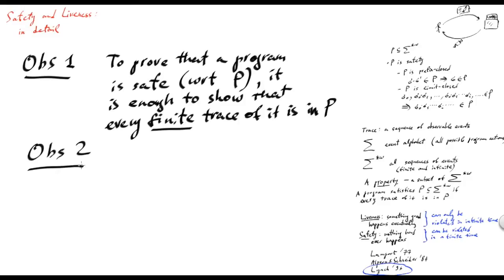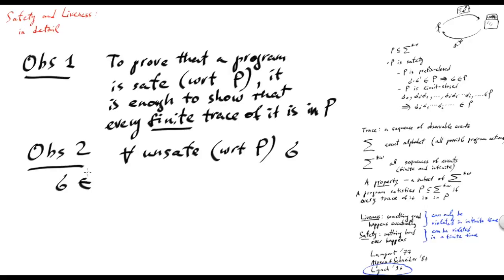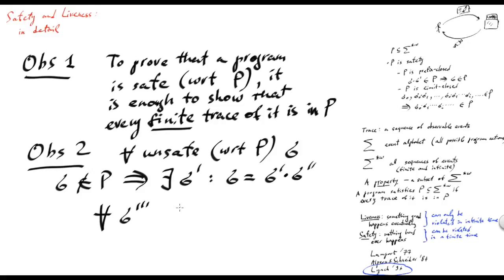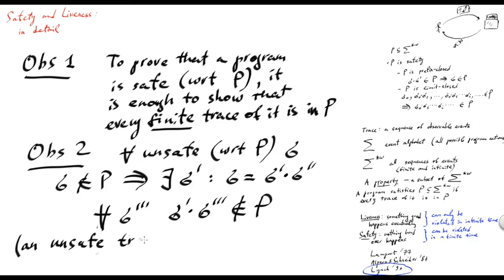The second observation is that if we have an unsafe trace sigma with respect to a given safety property — meaning that sigma does not belong to P — it follows that there exists a prefix of it such that for all extensions of it we get an unsafe trace. This intuitively implies that an unsafe trace cannot be corrected. There is always a finite prefix of an unsafe trace from which you cannot get a safe trace by extending it.